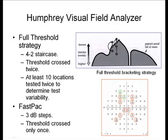There are different test-taking strategies to bracket thresholds. The one typically described is the full threshold strategy, using a 4-2 staircase. The machine jumps in increments of 4 decibels until the patient reports seeing the stimulus, then decreases by 2 decibels until it's no longer seen again. This bracketing process is most easily understood by looking at the accompanying diagram.